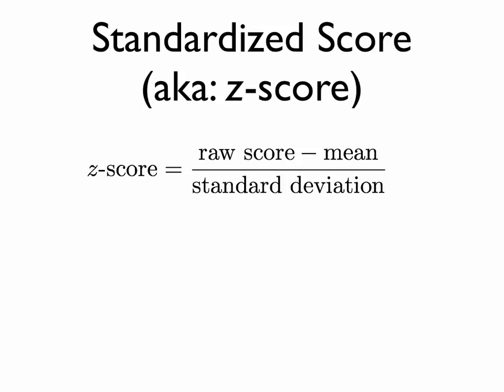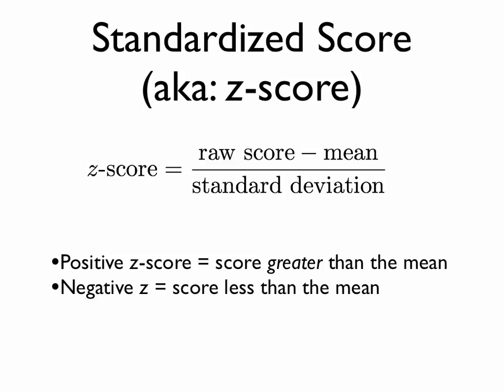If you have a positive z-score, that means you scored greater than the mean. A negative z-score means you scored less than the mean.